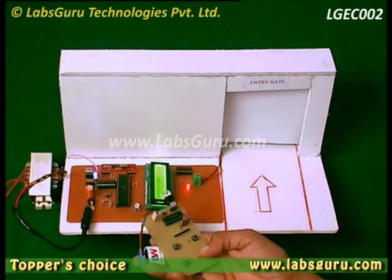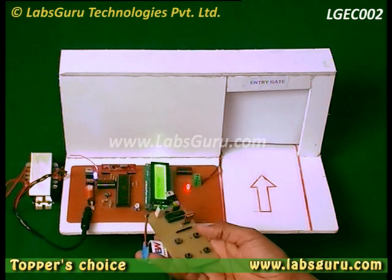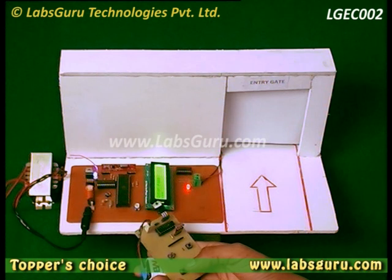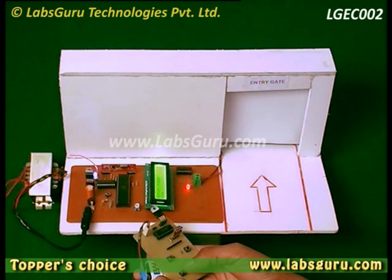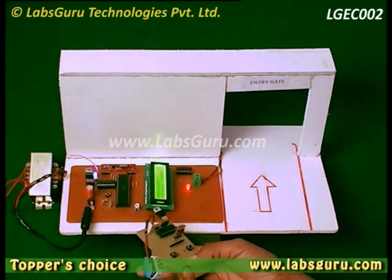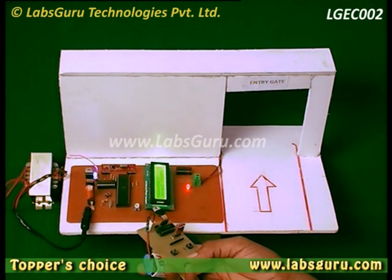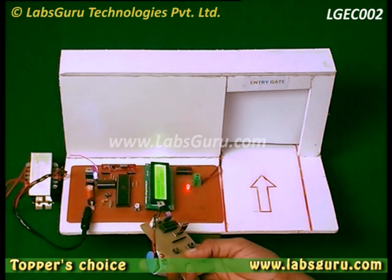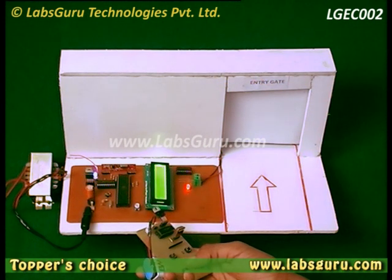For example, the password of the system is currently 1, 2, and 3. We can see that the gate will open for some moment and it will be closed automatically. The same is true for a second password, and the second user can also access the gate.